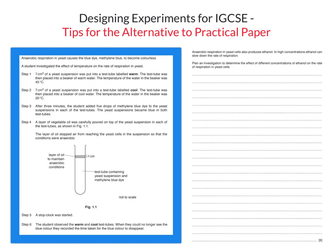On the right hand side we have a question that appears later in the paper. It says anaerobic respiration in yeast cells also produces ethanol, and that high concentrations of ethanol can slow down the rate of respiration. So we've changed what we're talking about here. The introduction on the left was about the effect of temperature, but this question now asks you to plan an investigation to determine the effect of different concentrations of ethanol on the rate of respiration — so the variable has changed.